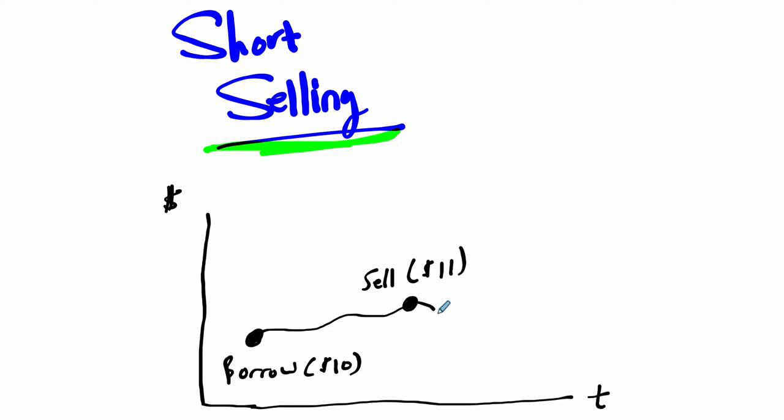But then the price falls low. Let's say it gets all the way down here. And you're really excited. The price has fallen. And what you do is then you buy it back. And let's say you buy it at $1. So you borrowed it at $10, you sold it at $11, and then you buy it back at $1.